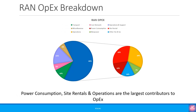If we now look at the RAN OpEx breakdown, we see that power consumption accounts for 9.75% of the total network OpEx. Site rental and RAN operations both account for the highest individual OpEx contribution within the network. Manpower is 6.5% of the network OpEx. And finally, other hardware and software linked to RAN accounts for 9.75% of the total network OpEx.